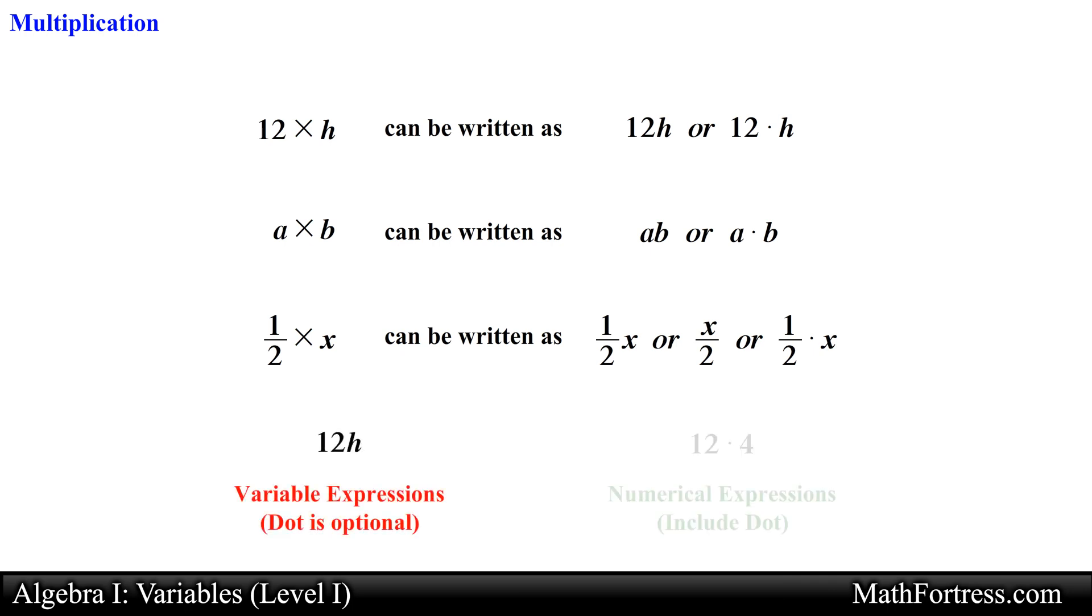For variable expressions, the way we denote multiplication is as follows. 12 times H can be written as 12H, likewise A times B can be written as AB, 1.5 times X can be written as 1.5X. Start getting used to writing multiplication in this way for variable expressions and with a dot for numerical expressions.